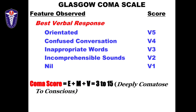Then you have the verbal response, V. If the patient is fully oriented the score is V5; confused conversation is V4; inappropriate words is V3; incomprehensible sounds is V2; and if there is no response it is V1. So a Glasgow Coma Scale score has values of E, M, and V, ranging from 3 to 15 — where 3 is a deeply comatose patient and 15 is a fully conscious patient.